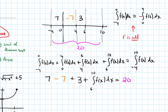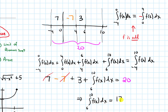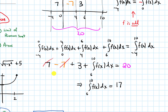Simplifying: the 7s cancel, and if I subtract 3, this implies the integral from 6 to 10 of our function will be equal to 17. And that is our answer.